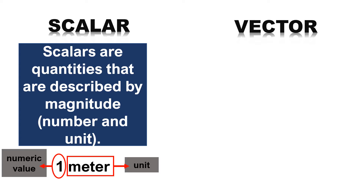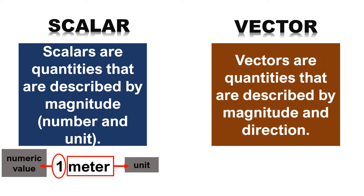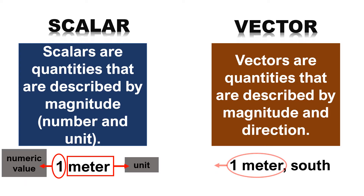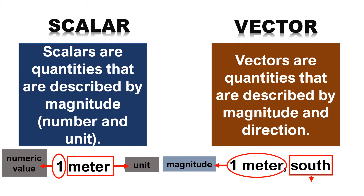Vectors, on the other hand, are quantities that are described by magnitude and direction. For example, 1 meter south — 1 meter is the magnitude and south is the direction.